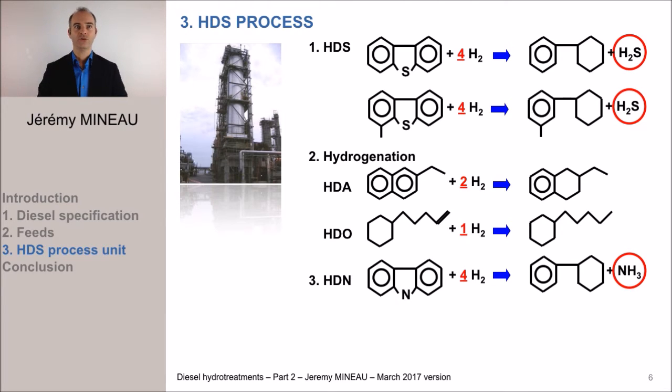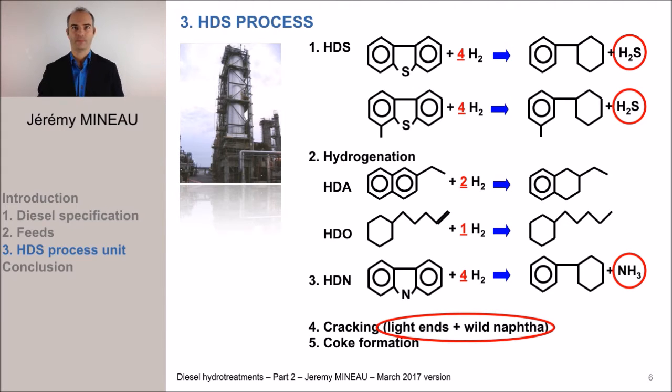Finally, the two last reactions which we can mention are cracking and coking. Cracking occurs because since the temperature in the reactor is rather high, we cannot avoid some thermal cracking. We produce then light hydrocarbons, typically in C1 to C4, as well as a quantity of molecules whose distillation curve is similar to the one of gasoline. We call that cut wild naphtha.